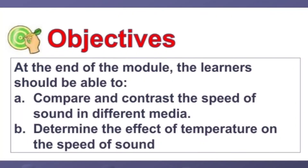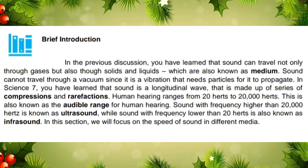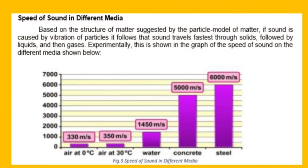We'll now proceed to the speed of sound. At the end of the module, the learners should be able to: a) compare and contrast the speed of sound in different media, and b) determine the effect of temperature on the speed of sound. Sound is a longitudinal wave made of a series of compressions and rarefactions. Human hearing ranges from 20 Hz to 20,000 Hz, known as the audible range. Sound with frequency higher than 20,000 Hz is ultrasound, while sound lower than 20 Hz is infrasound.